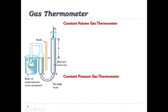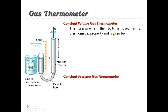The bulb is in communication via a capillary tube with one limb of a mercury manometer. One limb is open to the atmosphere and the other is connected to the capillary tube. The pressure in the bulb is the thermometric property and measurement of temperature. The pressure in the bulb is expressed as P = P₀ + ρMgH, where H is the rise of mercury in one limb, P₀ is the atmospheric pressure, and ρMgH represents the density contribution of mercury.